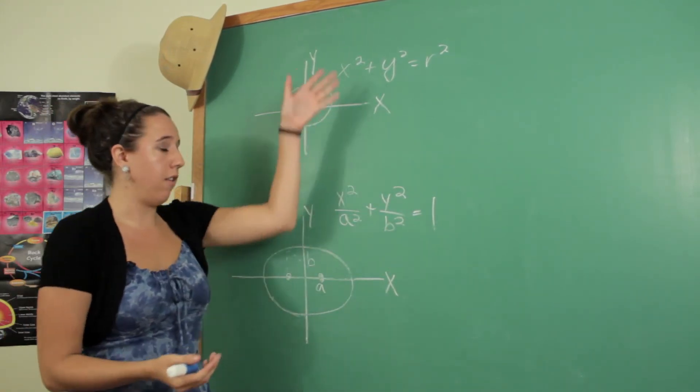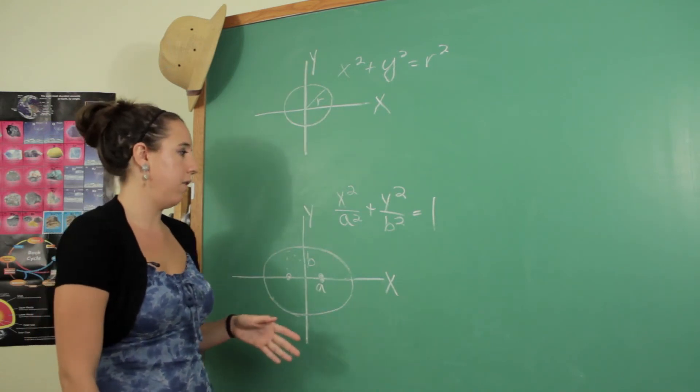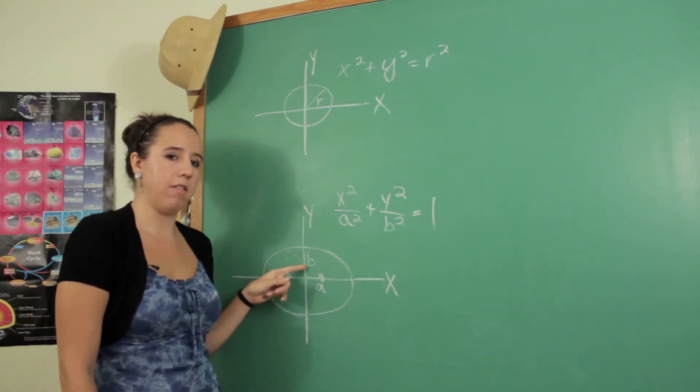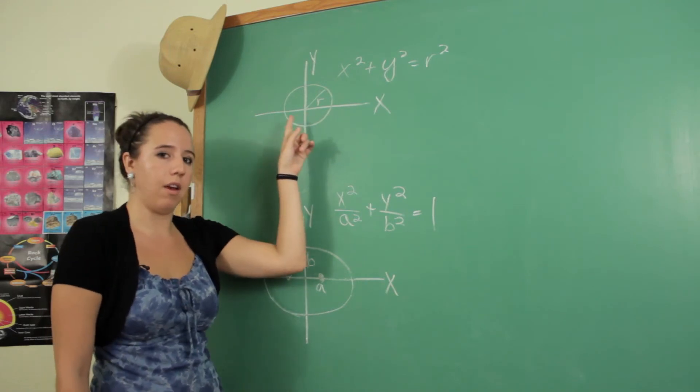So again, you see kind of the symmetry between these two. Just know that with the ellipse, you actually do need these two points to define it, not just one, like with the circle.